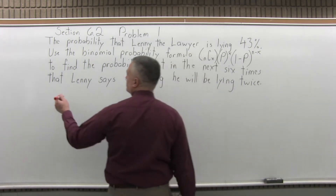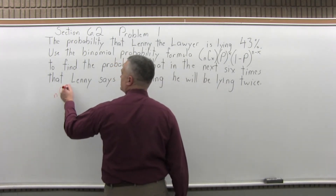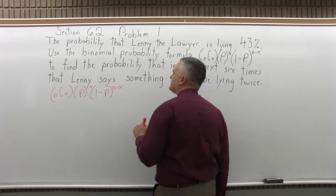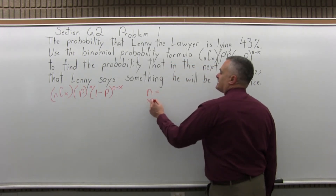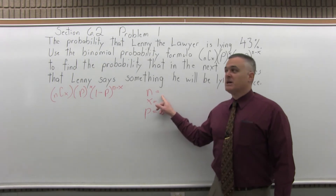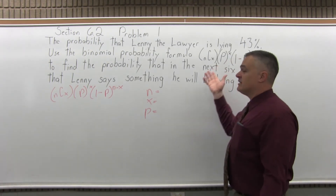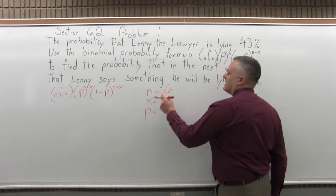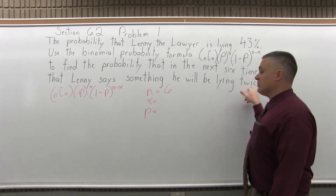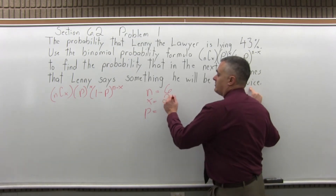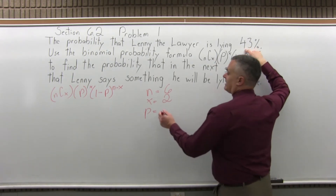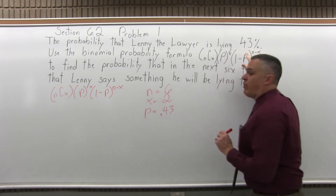What I like to do when I do one of these problems is start by writing the formula: n combination x, times p to the x power, times 1 minus p to the n minus x. Then off to the side, write n equals, x equals, p equals, so that we can fill in the formula. n is the total number of trials — in this case, n is 6 because we're going to see Lenny say something 6 times. x is the number of successes, which is 2 for twice. And p is the probability of success as a decimal — the question gives 43%, but we have to enter that as 0.43.